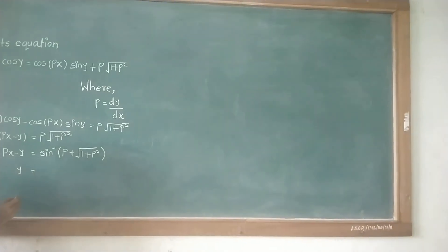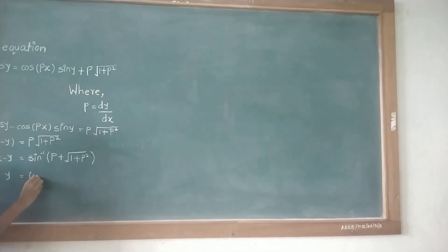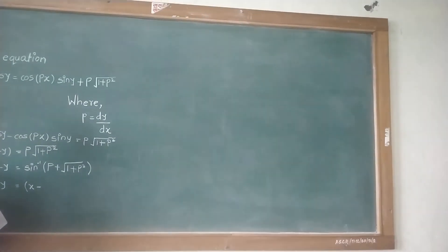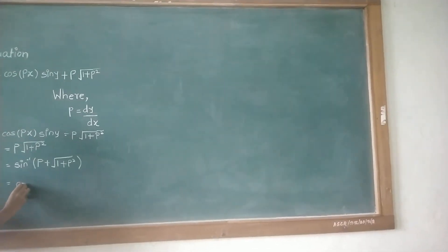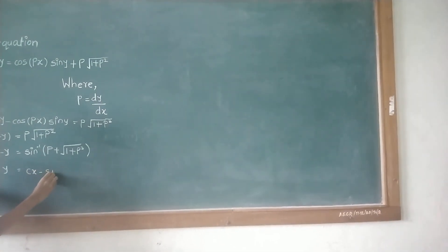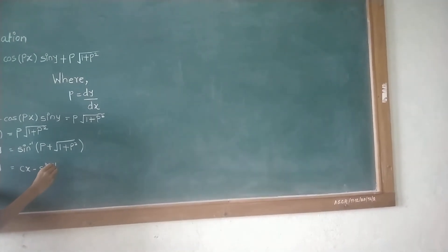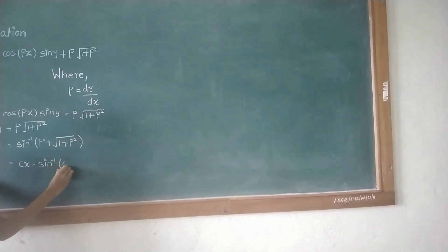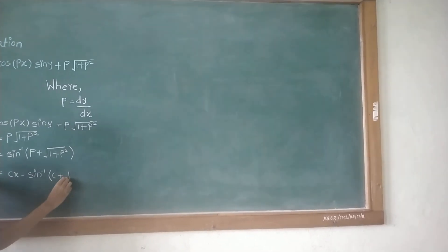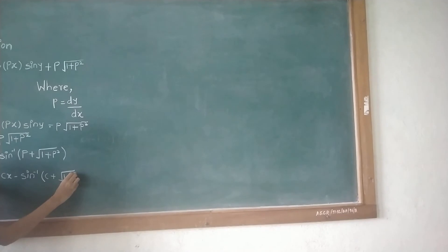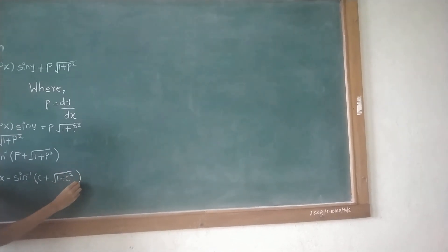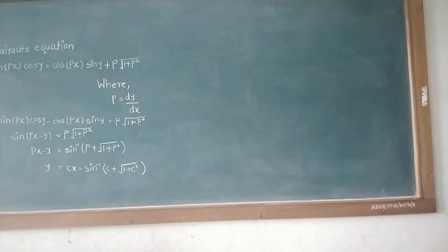Solving further, we get px - y = sin⁻¹(p√(1+p²)), which we can write by replacing p by c, which is in Clairaut's form. So we can write y = cx - sin⁻¹(c√(1+c²)). Therefore, the answer of the equation is y = cx - sin⁻¹(c√(1+c²)).